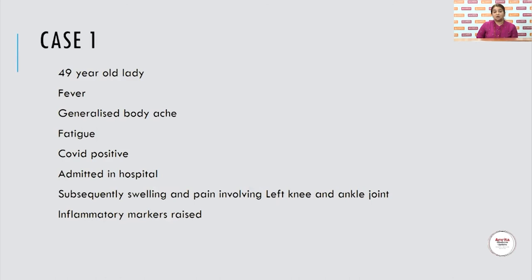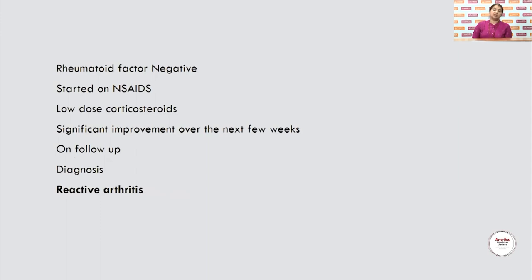Let us see a few cases. A 49-year-old lady came with fever, generalized body ache, and fatigue. She turned out to be COVID positive and was admitted. Subsequently, she had swelling and pain involving the left knee and the ankle joint — an oligoarticular involvement with fewer than four joints. Inflammatory markers were raised, rheumatoid factor was negative. She was started on NSAIDs and low-dose corticosteroids with significant improvement over the next few weeks. The diagnosis: reactive arthritis due to COVID.